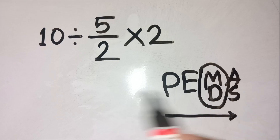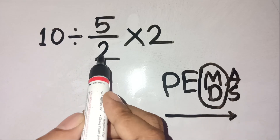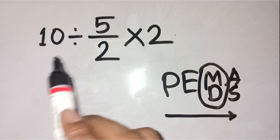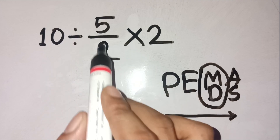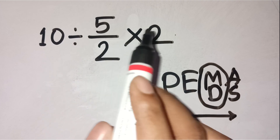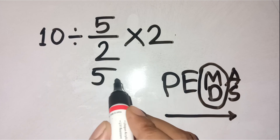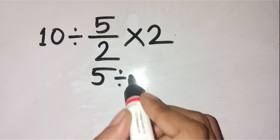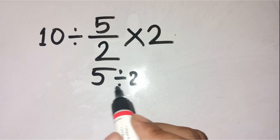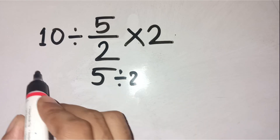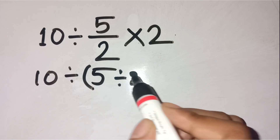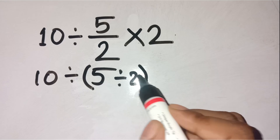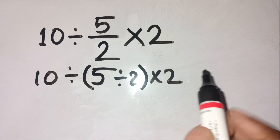So our expression is 10 divided by 5 over 2 times 2. The fraction 5 over 2 means 5 divided by 2 — it doesn't just cancel with that last 2.